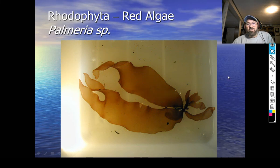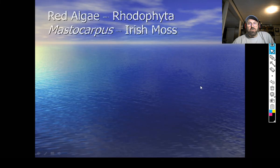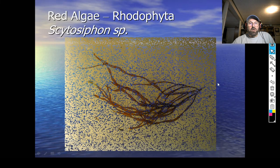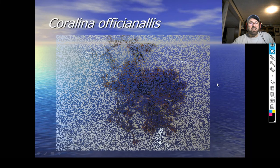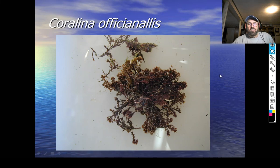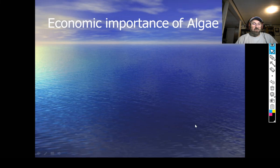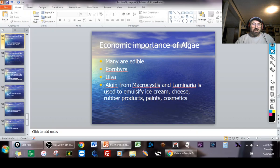There are also coralline red algae that incorporate calcium carbonate into their cell walls, which helps reduce predation. Chondrus crispus is really common along the rocks — if you boil it you can extract a substance called carrageenan. Palmeria is a flat-bladed algae with the holdfast and blades visible and a reduced stipe. Corallina officinalis is a coralline algae — hard because of the calcium carbonate in the cell wall. Next time we'll talk about the economic importance of algae.